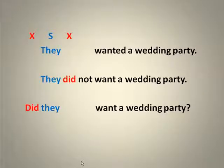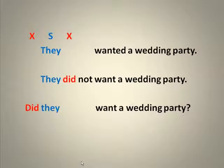'They wanted a wedding party.' Here in the affirmative sentence, we don't see the X word, but we know that to make a yes or no question or a negative, we need X words. In this case, we can use 'did' — or other sentences may need 'do' or 'does.' But when we form the negative and the yes or no question, we find the two places we can put 'did,' and immediately we see what the subject is — the word or words between those two places for 'did.'